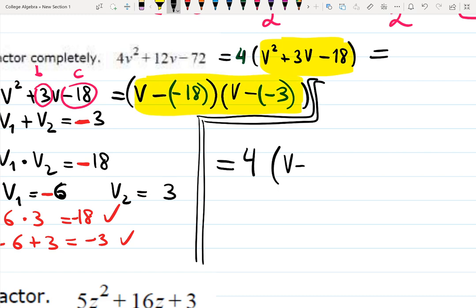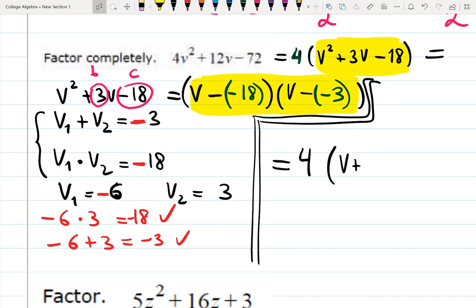And now, whatever was in yellow here, will be factored this way. It's going to be v plus 18. Is it 18? It's supposed to be... Oh, not 18 actually. That's 6. Oh yeah, that's a good typo here.